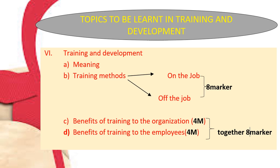You will be learning the meaning of training and development. Training methods are divided into on-the-job and off-the-job, which will come for an eight marker. Then you have the benefits of training to the organization and benefits of training to the employee, each for a four marker, but together asked for an eight marker. First we study the meaning, then training methods, then benefits to the organization and employees.